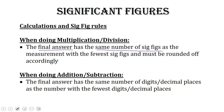When you're doing addition and subtraction, the final answer has the same number of digits or decimal places as the number with the fewest digits.